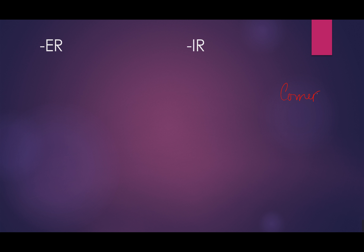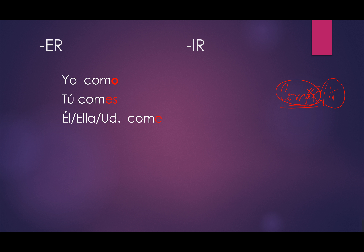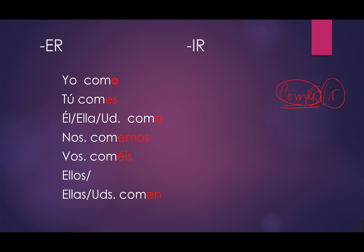Yesterday we did AR verbs, and today we're doing ER and IR verbs — the same rules apply. Comer is the infinitive; we need to drop the ER and add the following endings: yo como, tú comes, él/ella/usted come, nosotros comemos, vosotros comes, ellos/ellas/ustedes comen.